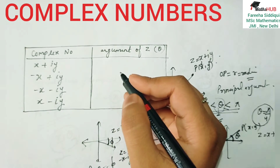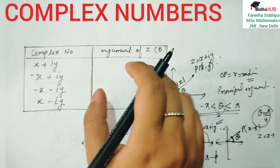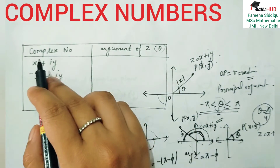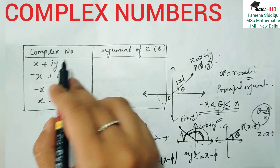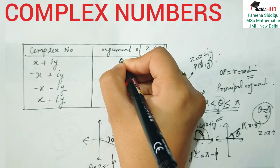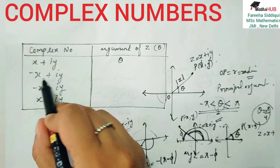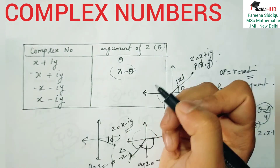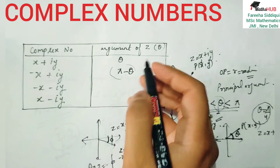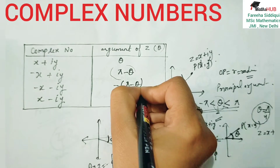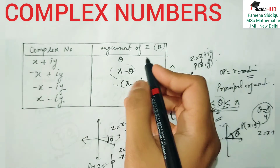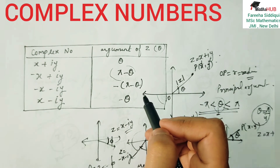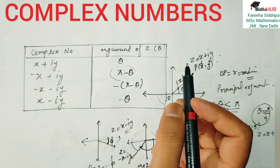If you want to solve all questions easily and directly, you need to learn this table. Aap isse learn kar lijiye — easily aapke saare questions ho jayenge without a single mistake. If the complex number is in the first quadrant (x + iy), use theta as the argument directly. If it's in the second quadrant (−x + iy), use pi minus theta as the argument. If you have −x − iy (third quadrant), use minus of (pi minus theta). If the complex number is in the fourth quadrant, use minus theta. Learn this table and you can solve all questions quickly.